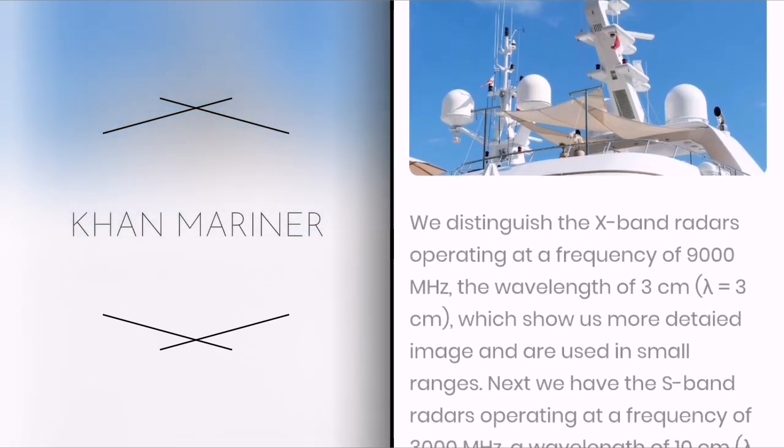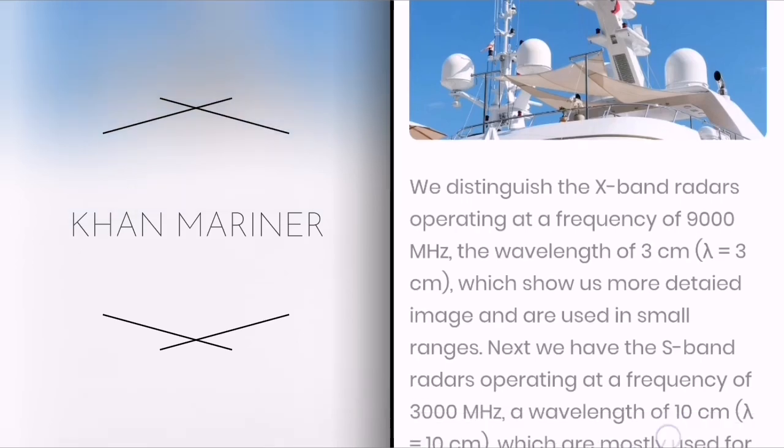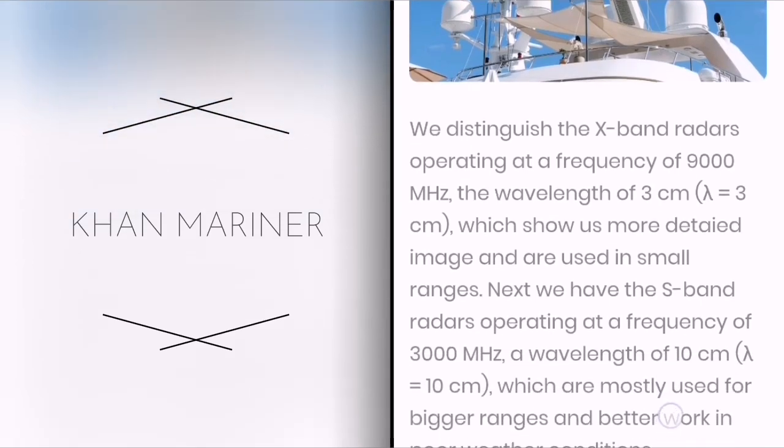The wavelength of 3 cm (λ = 3 cm) shows us more detailed images and are used in small ranges. Next we have the S-band radars operating at a frequency of 3000 MHz, a wavelength of 10 cm (λ = 10 cm).